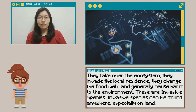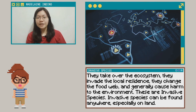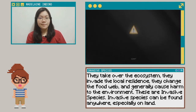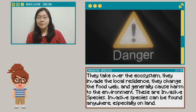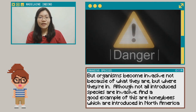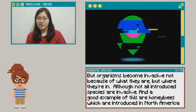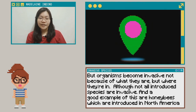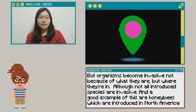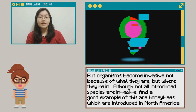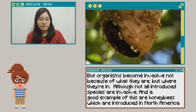They take over the ecosystem. They invade the local residents. They change the food web and generally cause harm to the environment. These are invasive species. They can be found anywhere, especially on land. But organisms become invasive not because of what they are, but where they are. Although not all introduced species are invasive —